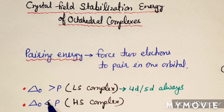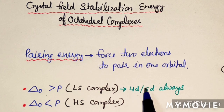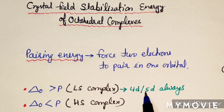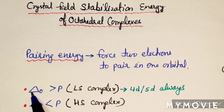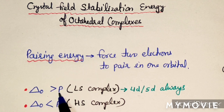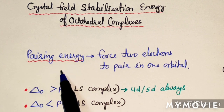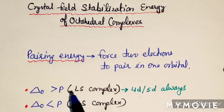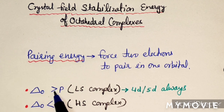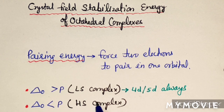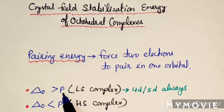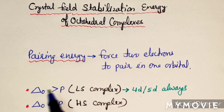For 4D and 5D series, the high spin condition does not apply — these complexes always form low spin complexes because delta O is always greater than pairing energy. Pairing energy is the energy required to force two electrons to pair in one orbital. For 3D metal complexes, if delta O is less than P, it is a high spin complex.